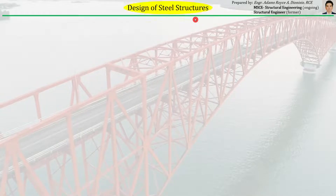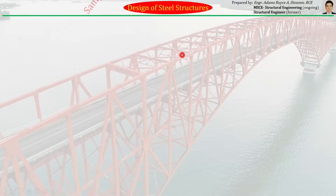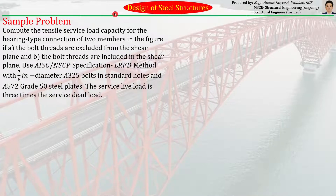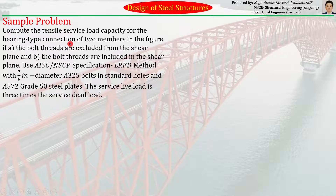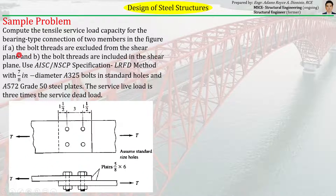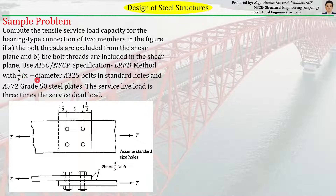Let's try answering this sample problem. Compute the tensile service load capacity for the bearing type connection of two members in the figure. Letter A: the bolt threads are excluded from the shear plane. Letter B: the bolt threads are included in the shear plane. Use AISC specification, LRFD method, with 7/8-inch diameter A325 bolts in standard holes and A572 Grade 50 steel plates. The service live load is three times the service dead load.